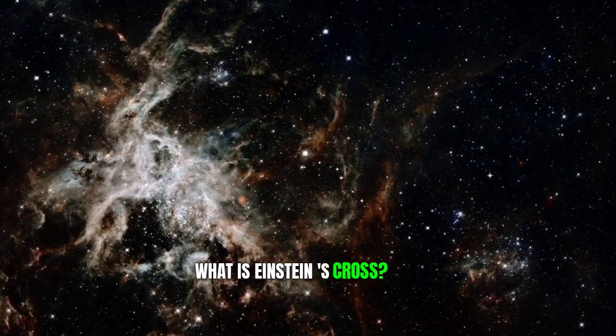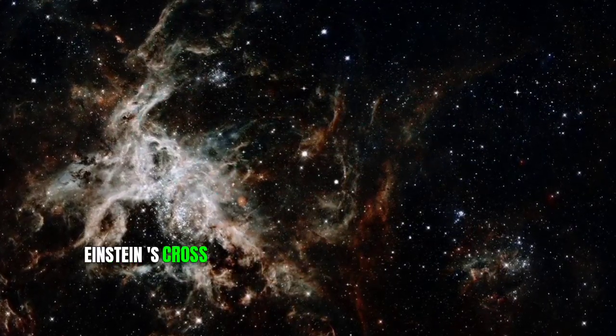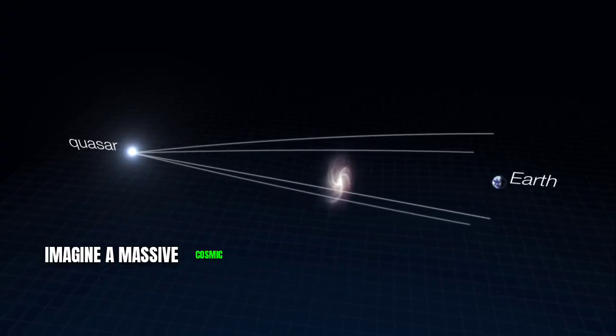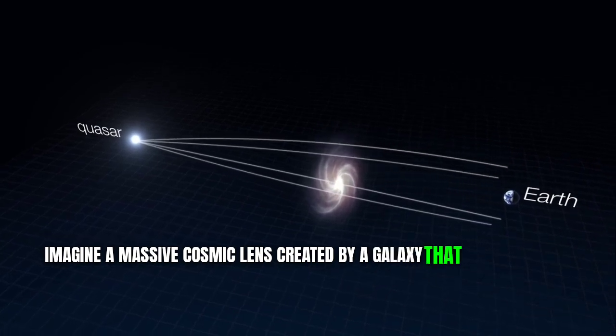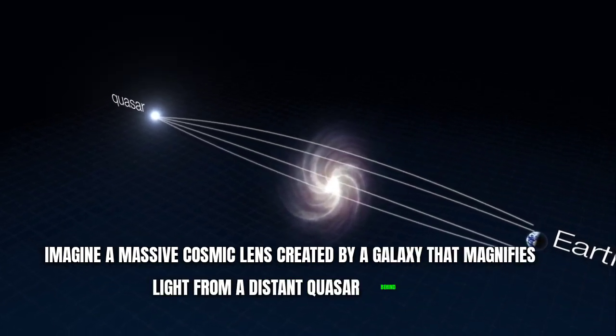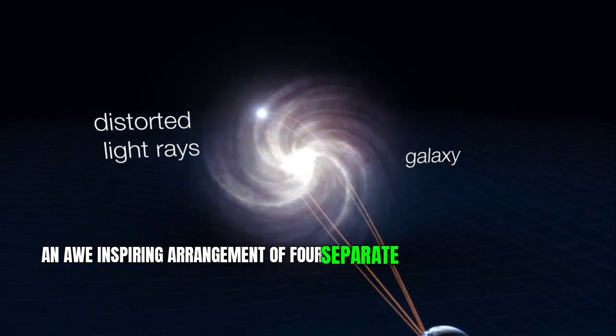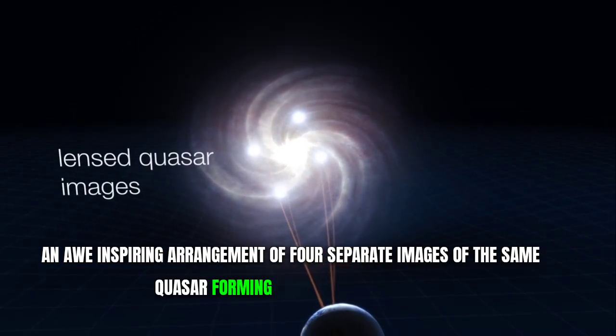What is Einstein's cross? Einstein's cross is a fascinating phenomenon known as gravitational lensing. Imagine a massive cosmic lens created by a galaxy that magnifies light from a distant quasar behind it. The result? An awe-inspiring arrangement of four separate images of the same quasar forming a cross-like pattern.